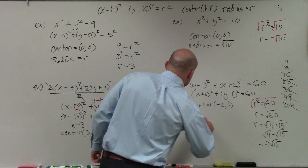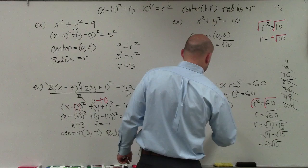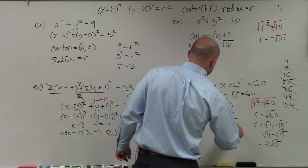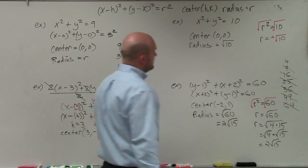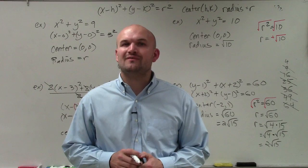We can say the radius is equal to square root of 60, or in simplified format, 2 square root of 15. So there you go, ladies and gentlemen. That is how you determine the center as well as the radius of a circle. Thanks.